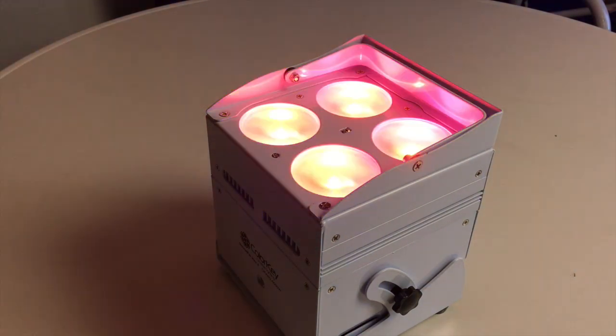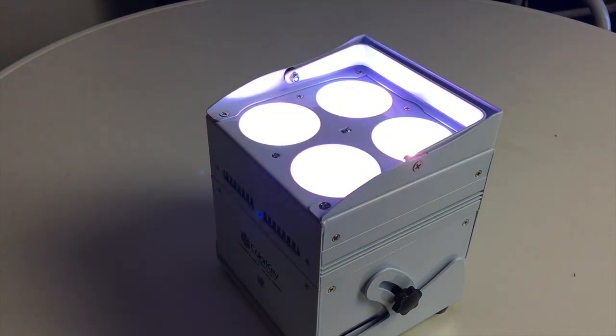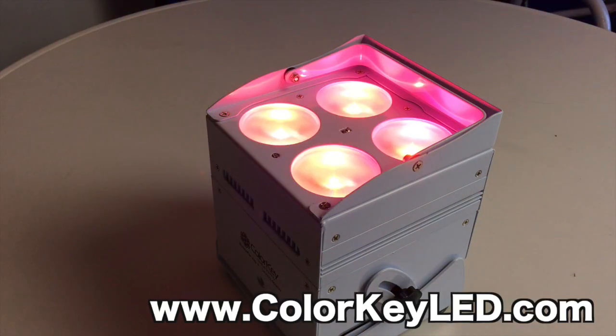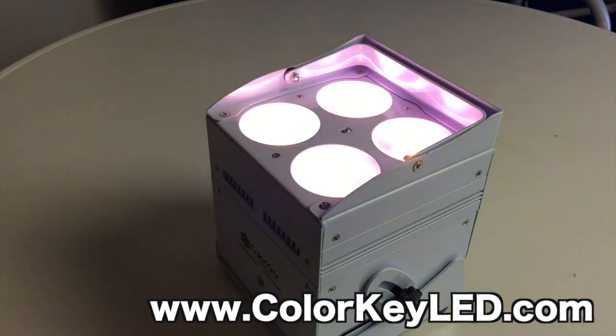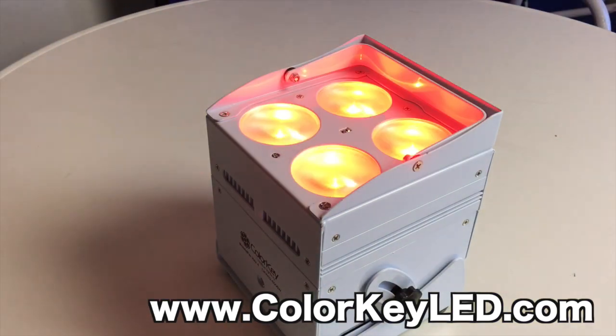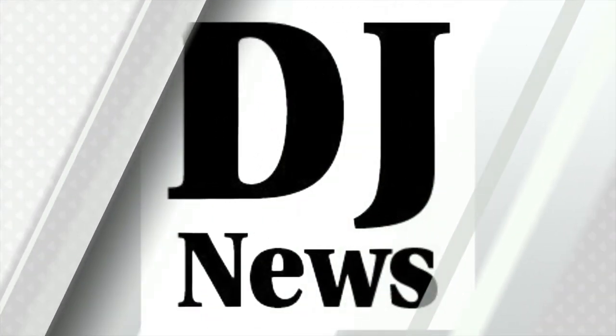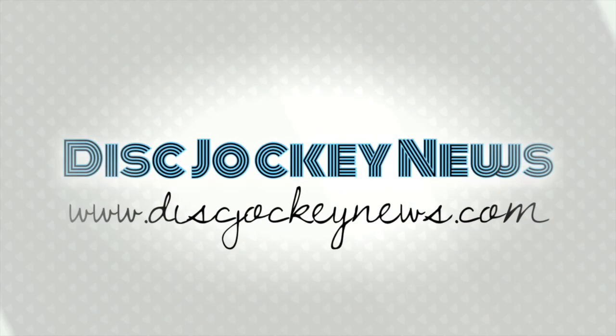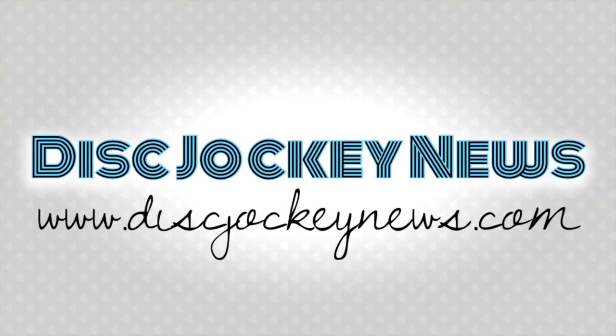But this comes in white or black. They also have a quad LED version. You can check out the other video. We'll put the link in the description below on that. But this is a mobile PAR HEX4, with HEX LEDs, RGB, AW, and UV. We'll put a link in the description below so you can check this out. This is from colorkeyled.com. We'll see you next time.